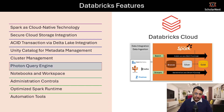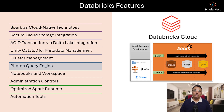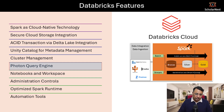Databricks also created a query accelerator called the Photon query engine. It is a transparent acceleration solution — you simply switch it on and it starts giving a boost to your Spark SQL queries and DataFrame APIs, making things run faster.